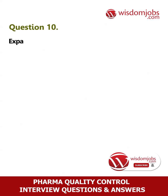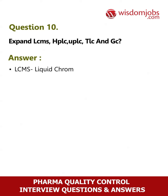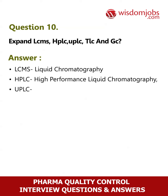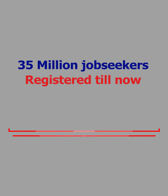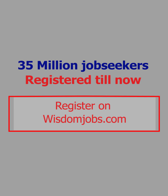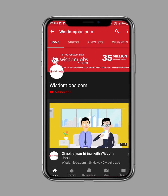Question 10: Expand LCMS, HPLC, UPLC, TLC, and GC. Answer: LCMS — Liquid Chromatography Mass Spectrometry; HPLC — High Performance Liquid Chromatography; UPLC — Ultra High Performance Liquid Chromatography; TLC — Thin Layer Chromatography; GC — Gas Chromatography.